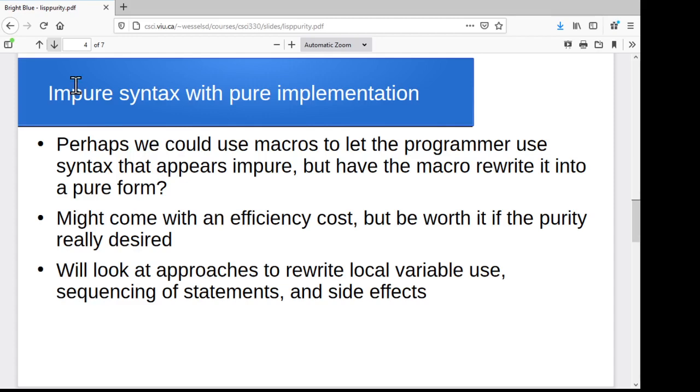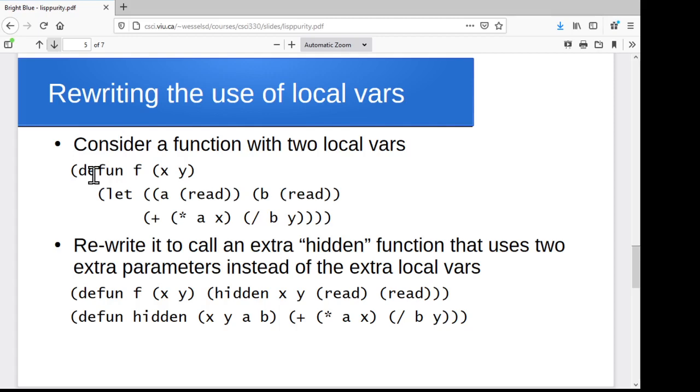So what we'll do is take a look at how we might actually do that, some steps that we could take. So let's say we've got a function with local variables and we want to rewrite it in a way that doesn't use local variables. So we get this function, define f of x. We're going to have a let block with two local variables, a and b, and they both get read from values the user provides and then we use them in some computation. And what we want is to rewrite that in a fashion that's functionally pure, that doesn't use local variables.